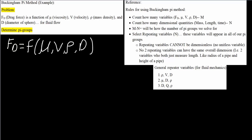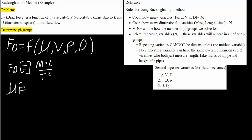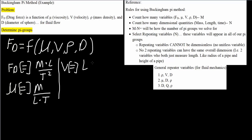Next, let's write the dimensions of each variable, including drag force. Drag force has dimensions M·L·T⁻². Viscosity has dimensions M/(L·T). Velocity is L/T. Density is M/L³. And finally, diameter is simply L.